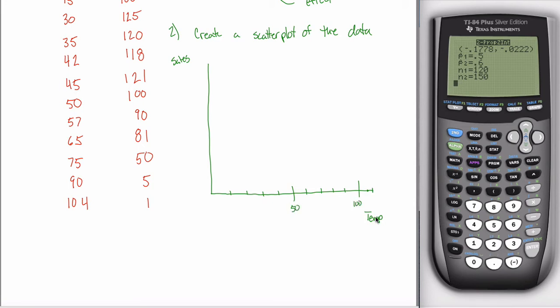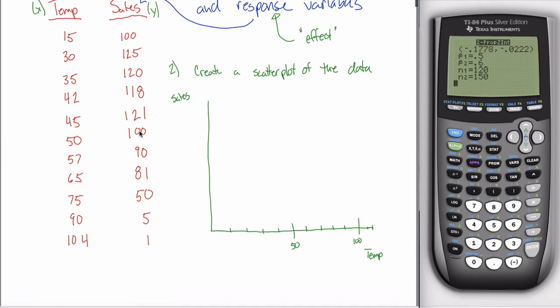Now my x-axis is both labeled and scaled. And I could do the same thing for my y-axis. It goes up to, what, 125 I think is the high. So maybe same scale: 10, 20, 30, 40, 50, 60, 70, 80, 90, 100, 110, 120, 130. That would be sufficient.